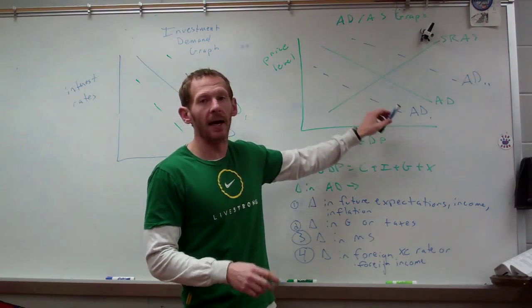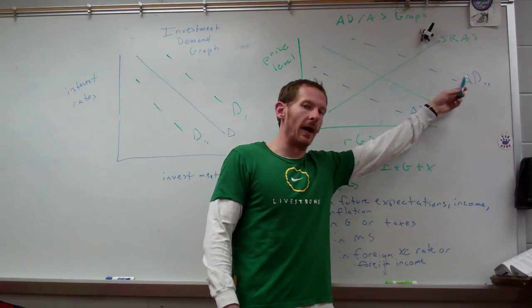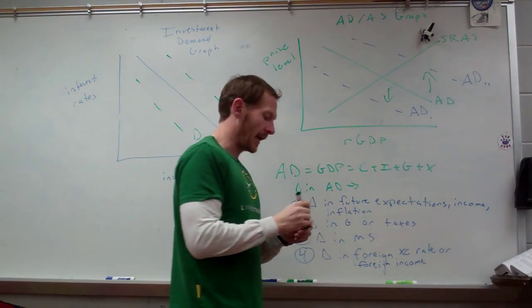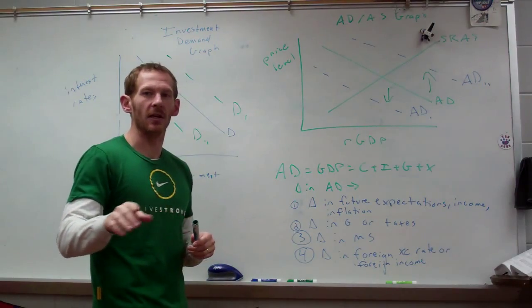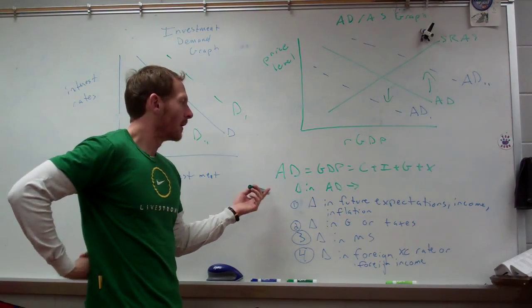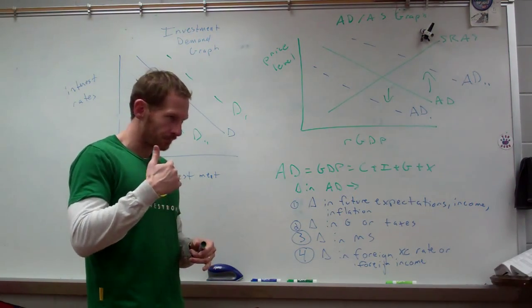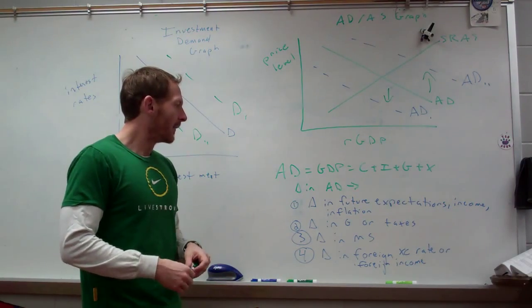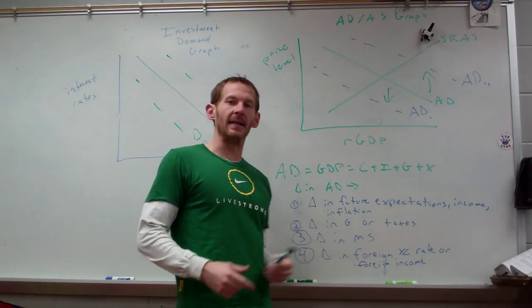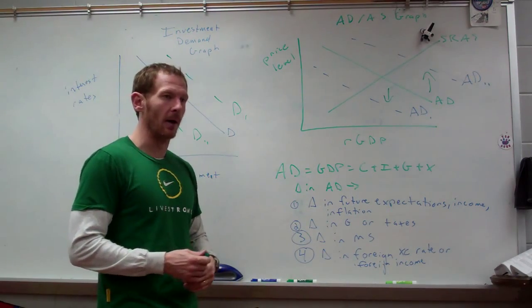We're going to be talking about supply later. But AD can shift to the right, which is an increase, or it can shift to the left, which is a decrease. And there are essentially four big factors that would change AD. Number one is a change in the future expectations, income or inflation. So for instance, if we know that in the future we're going to have more income, then we'll probably shift up to AD sub 2 because we'll be more likely to spend more. Our consumer spending would go up.